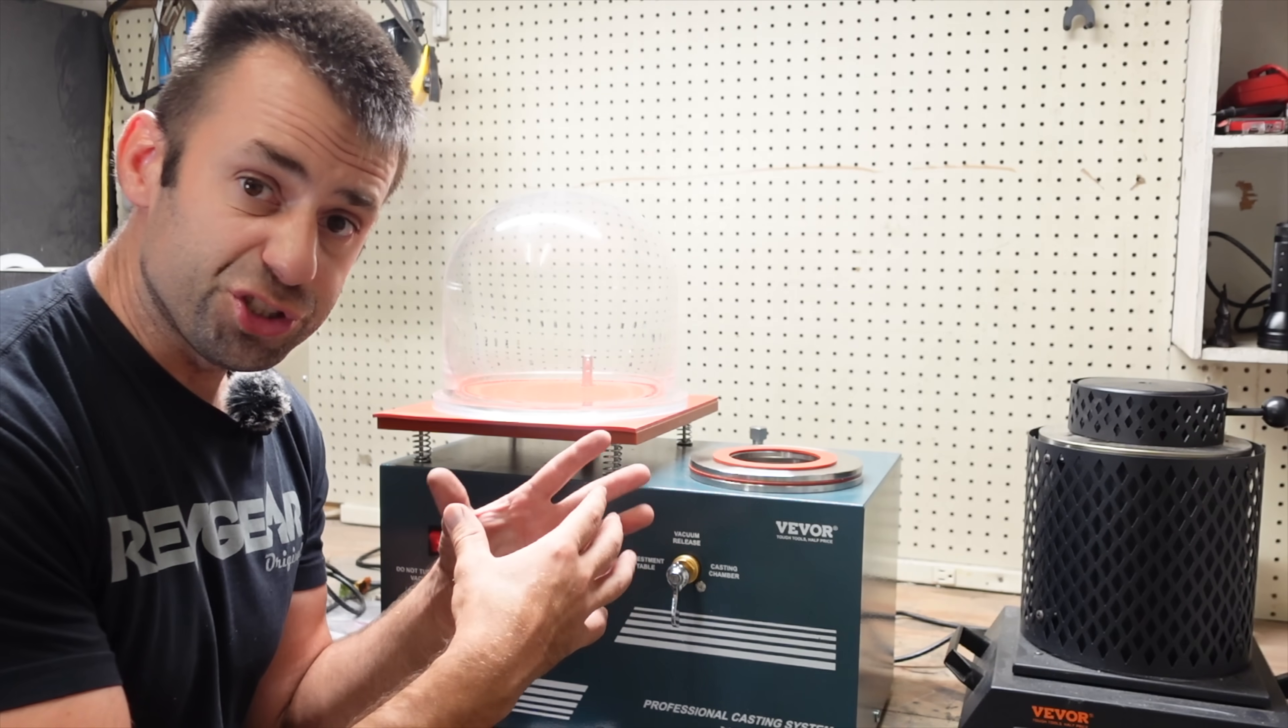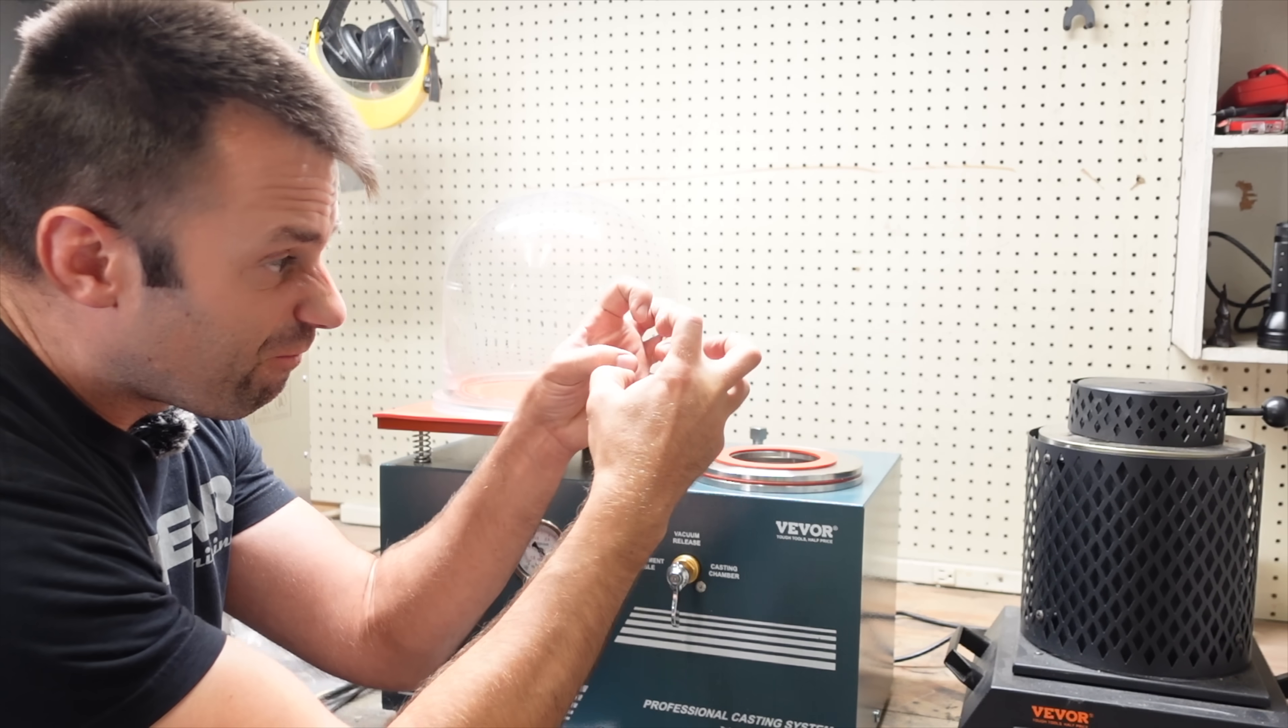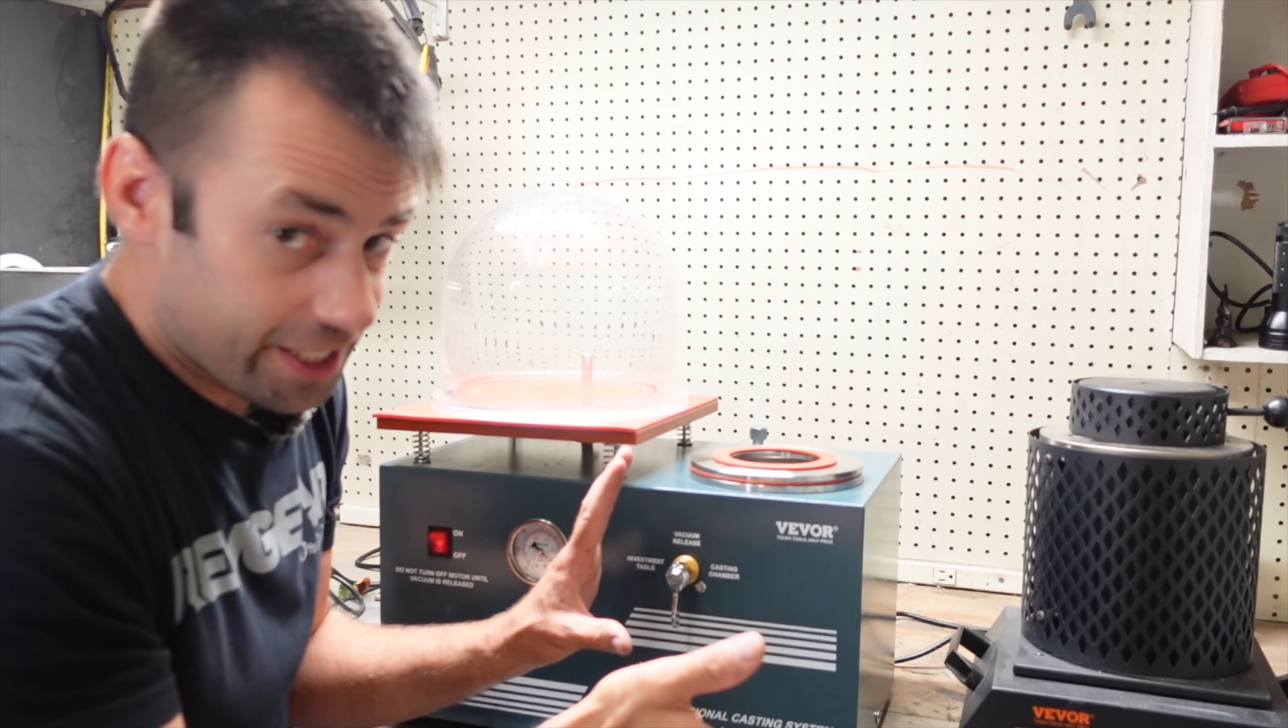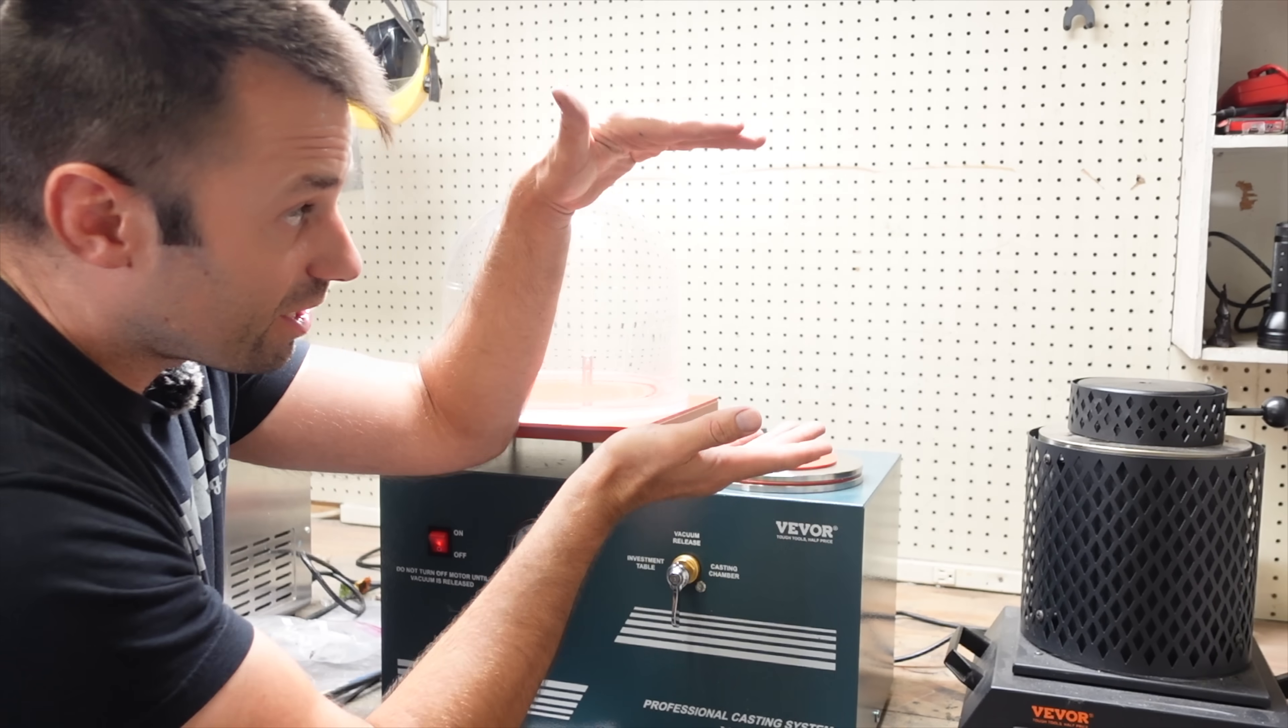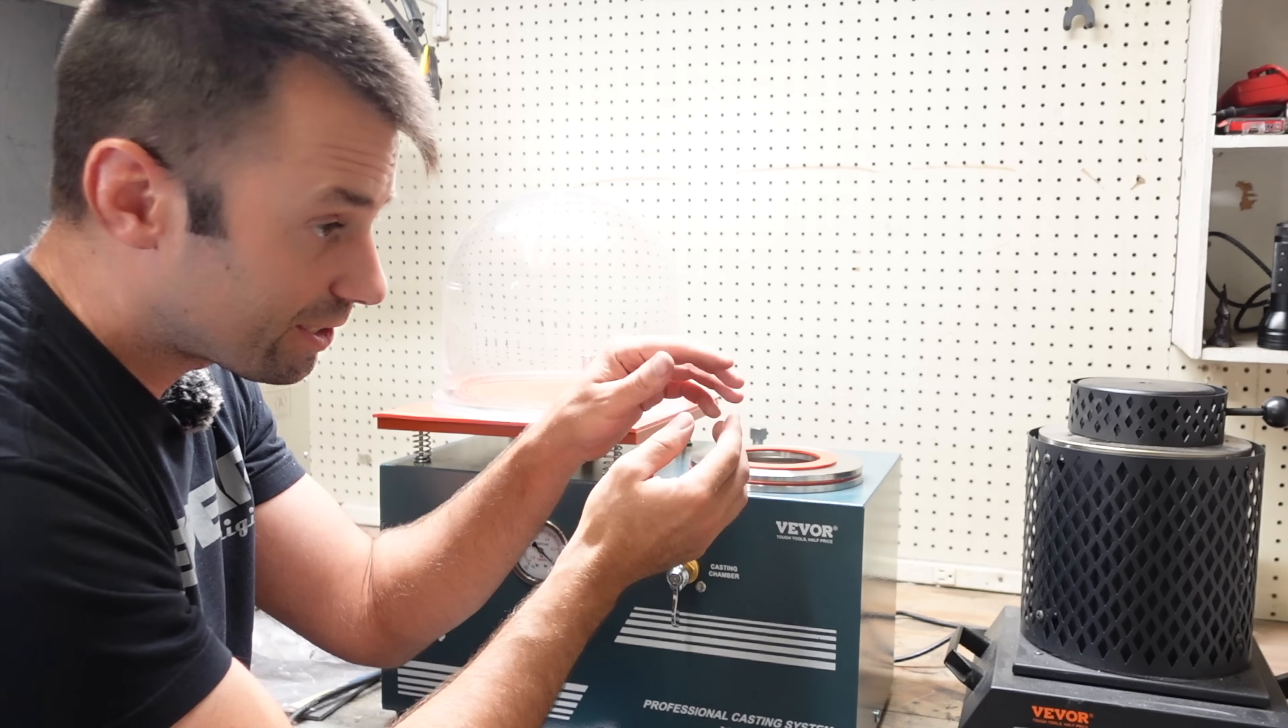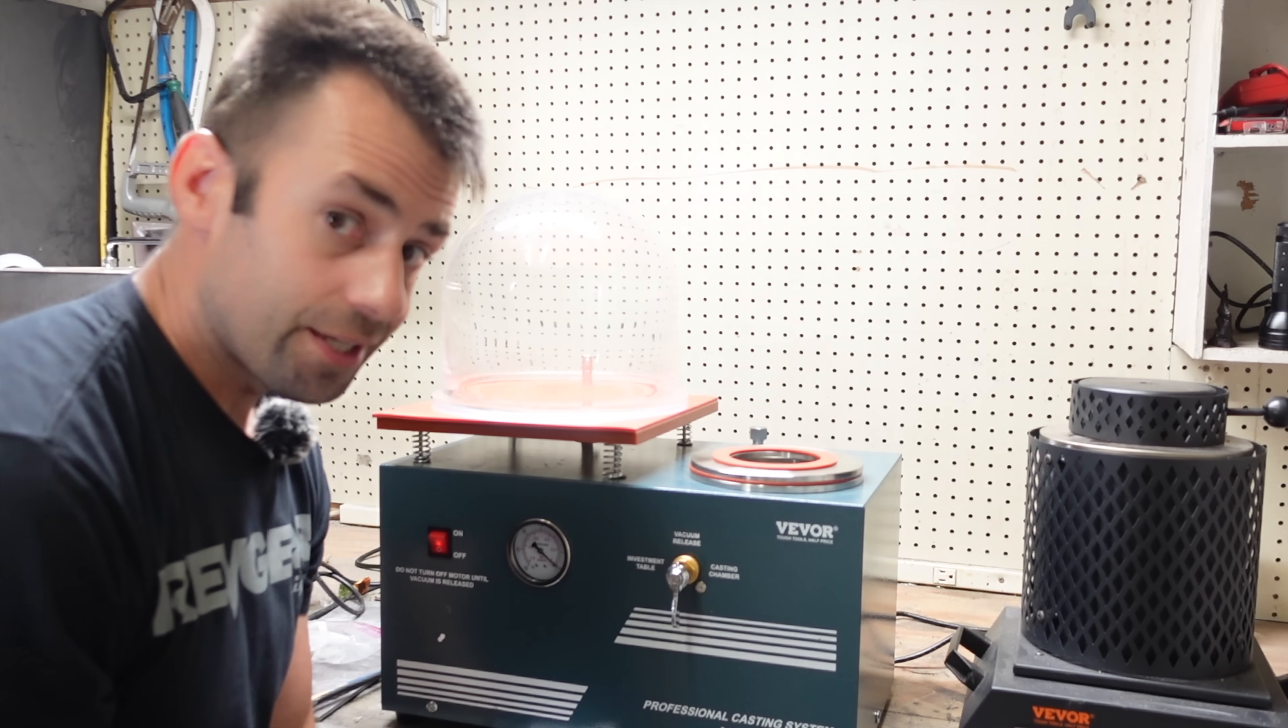People will also use centrifugal casting systems where they fling the metal in a circular motion and that centrifugal force forces the metal into the voids. It forces the metal into those tiny spaces. Pretty cool. Kind of scary but pretty cool too. And then you can use gravity but you need a high enough riser to push the metal down. All that heavy molten metal will force the metal into those spaces but it takes a lot more metal. So there's lots of different ways to do it. Vacuum casting system is just a nice way to do it.